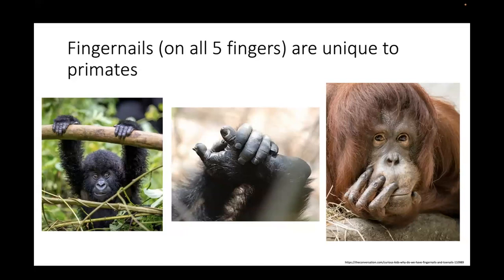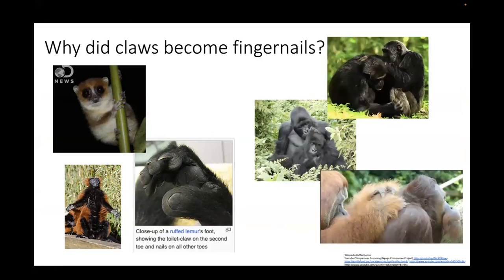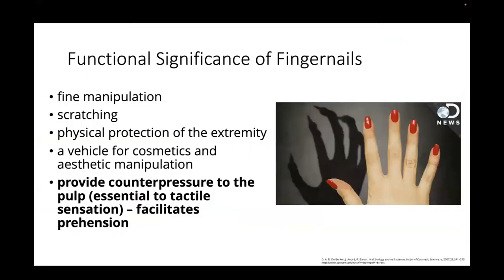Fingernails are unique to primates. It's not entirely clear what selective pressures led to the development of our fingertips. It's believed that fingernails and broad-based finger pads developed for improved prehension in a lemur-like ancestor that needed to grasp small branches. Lemurs retain at least one grooming claw, and the loss of grooming claws is probably a reflection of more complex social networks. The functional significance of fingernails includes providing counterpressure for the pulp, facilitating prehension and tactile sensation.